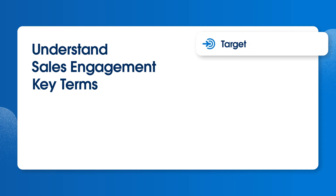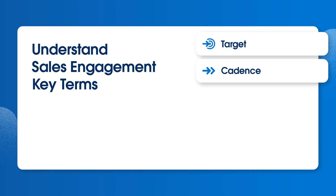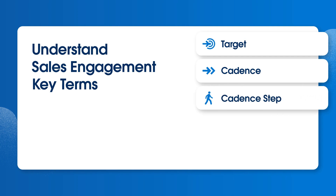Target is the lead, contact, or person account that is added to a cadence. Cadence is the sales flow built by your cadence builders. Cadence step is each step in a cadence. Each one has its own record and defining fields, such as step name, step type, and step comments.